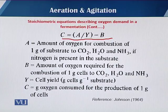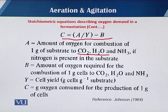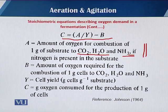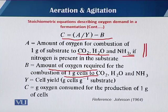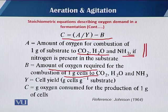Here, A is the amount of oxygen for the conversion of 1 gram of the substrate to carbon dioxide, water, and ammonia if nitrogen is present in the substrate. B is the amount of oxygen required for the conversion of 1 gram of cells to carbon dioxide, water, and NH₃. The difference is that A is the oxygen for the carbon source and B is for the respiration of the cells.